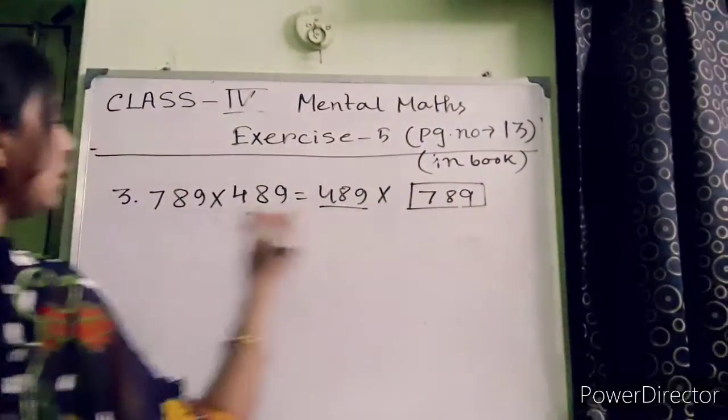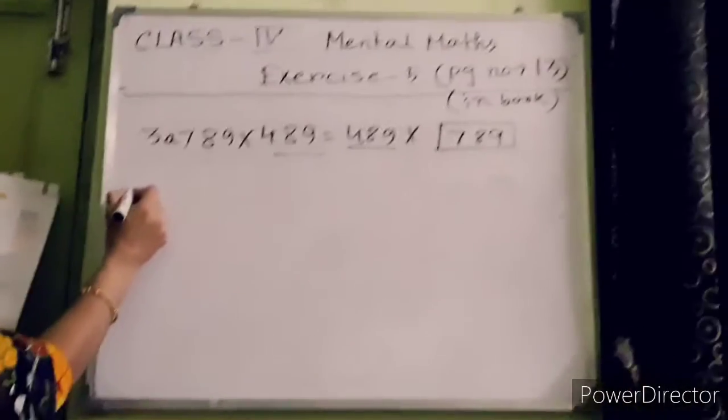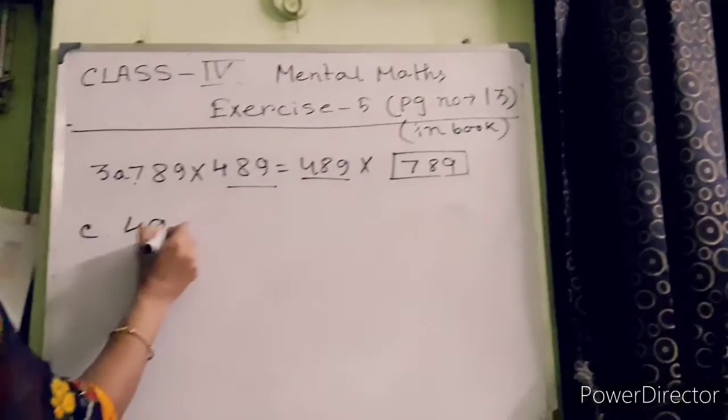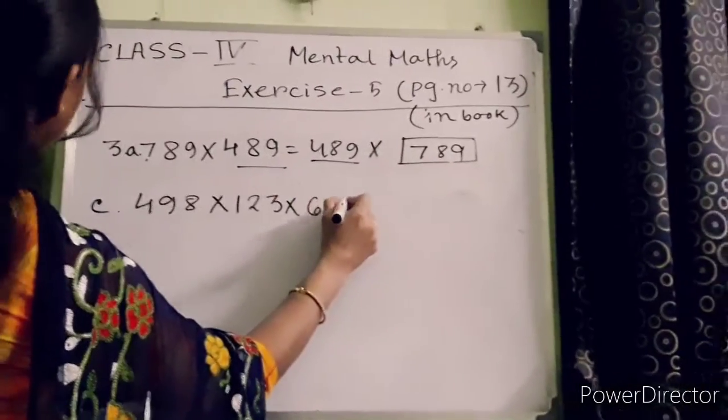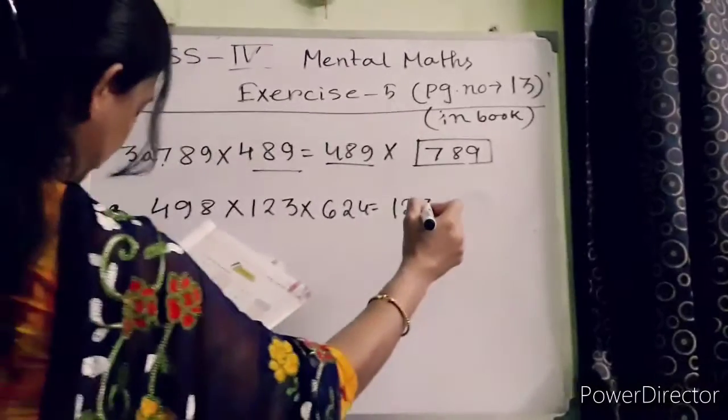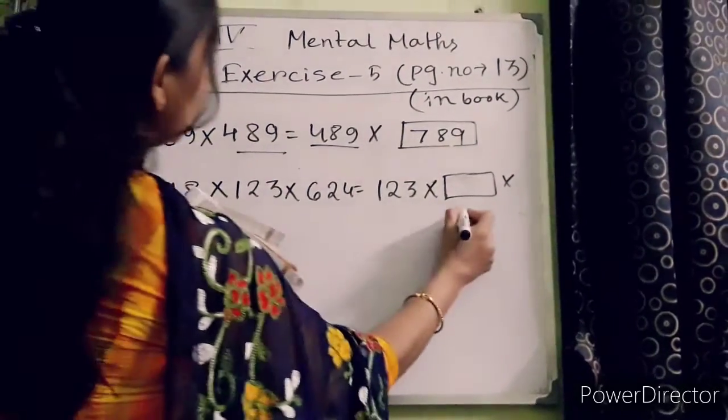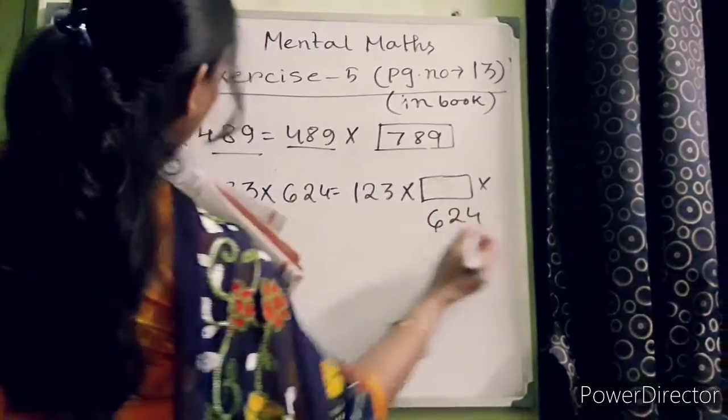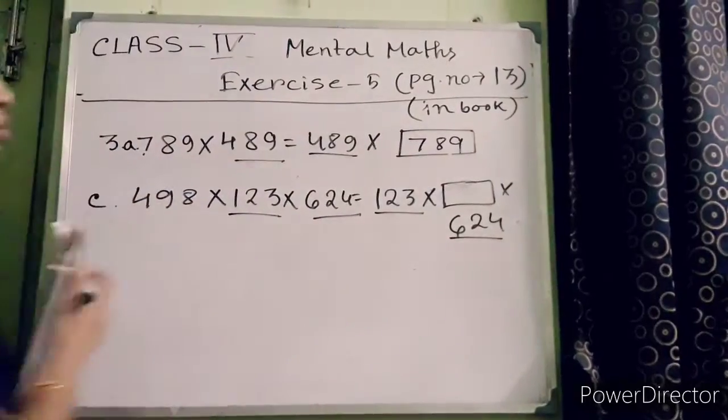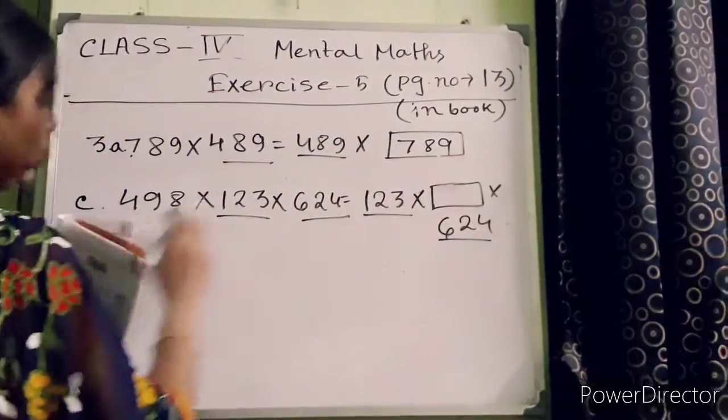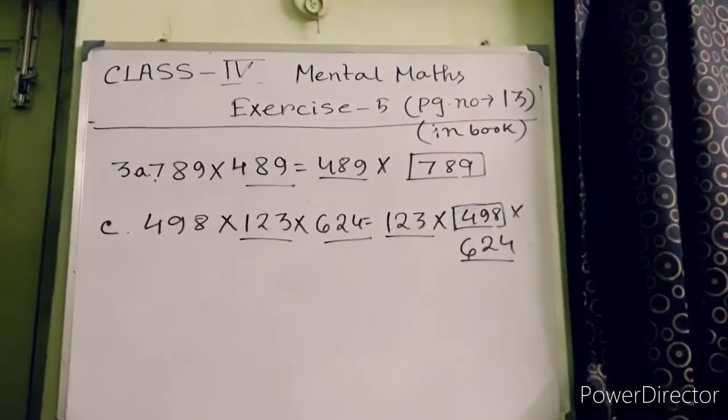See, 498 into 123 into 624. This one, 123 into 623. 623, 123, 123, 123. So this one is 624. So which one happens on this side? This one, 498. You have to do this very carefully.